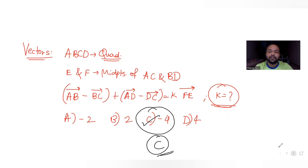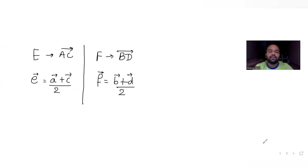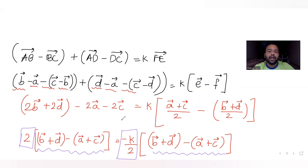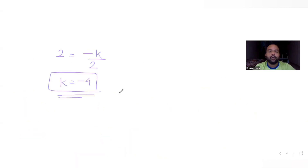It was a straightforward question — you just have to apply the ideas of vectors. First, use the midpoint formula to get vectors E and F. Once you have those, substitute into the given expression, make the bracket terms the same on both sides, and equate the remaining parts: minus K by 2 equals 2, giving K as minus 4, which matches the options.